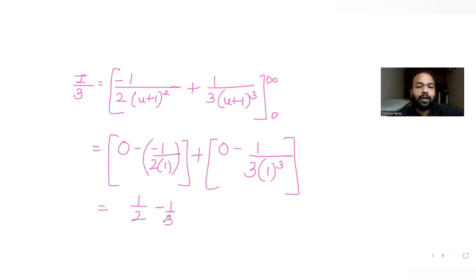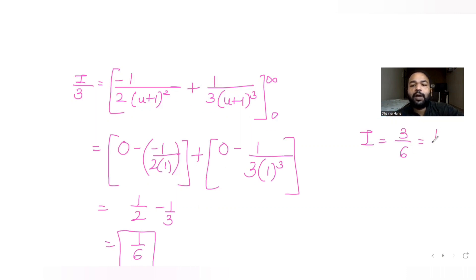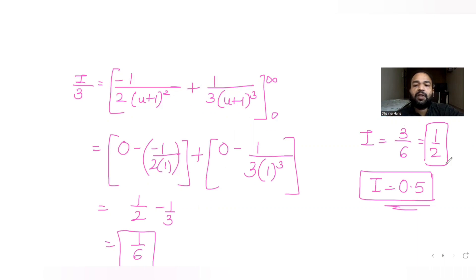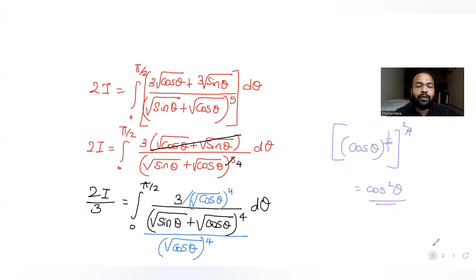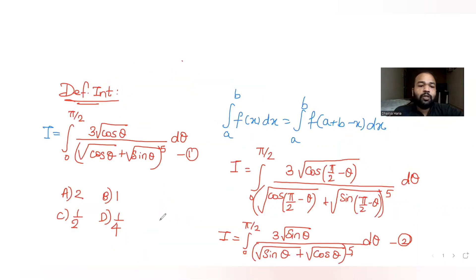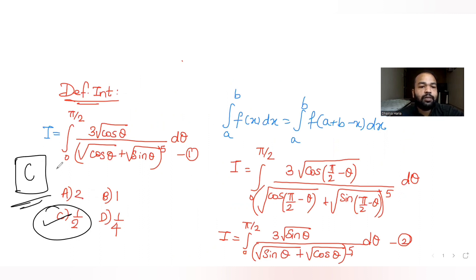So I/3 = 3/6 − 2/6 = 1/6, which gives I = 1/2. The answer for the question comes out to 0.5 or one-half. So the correct answer is option C.